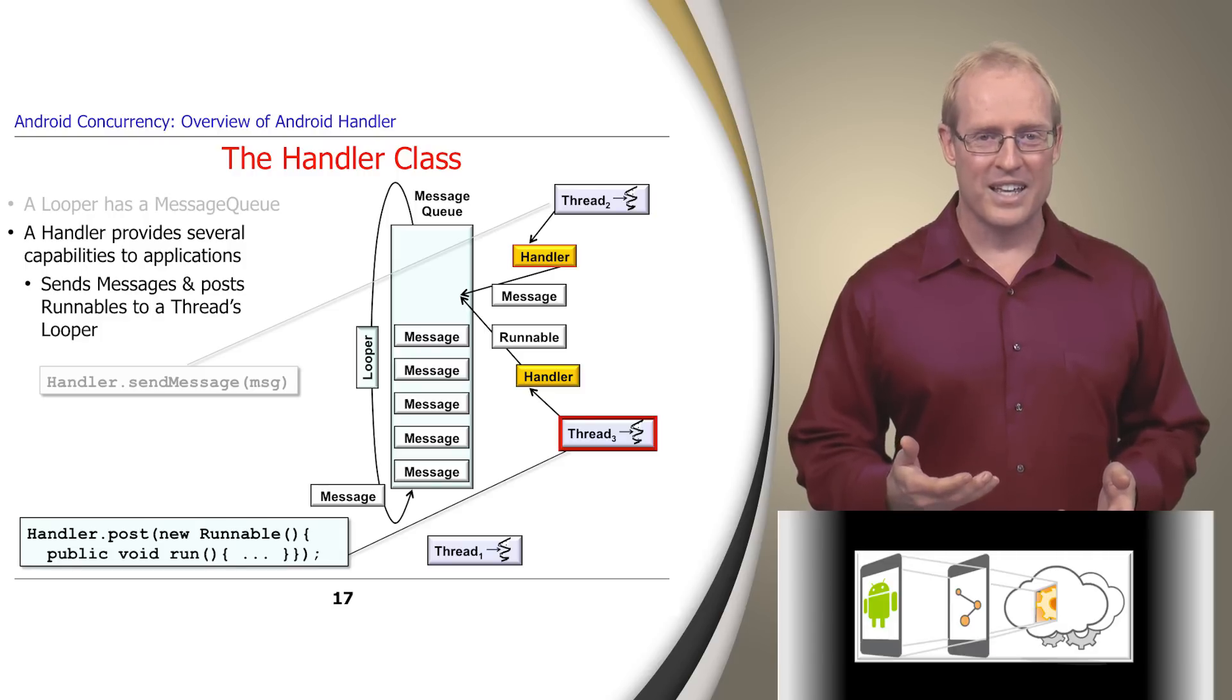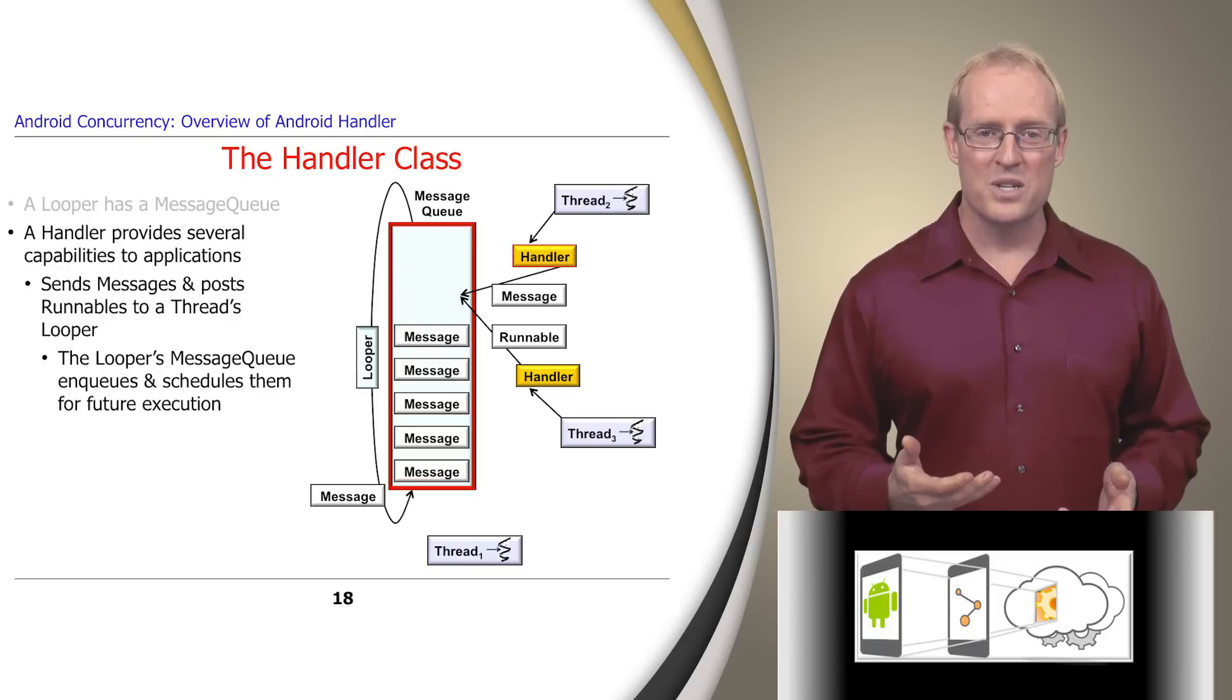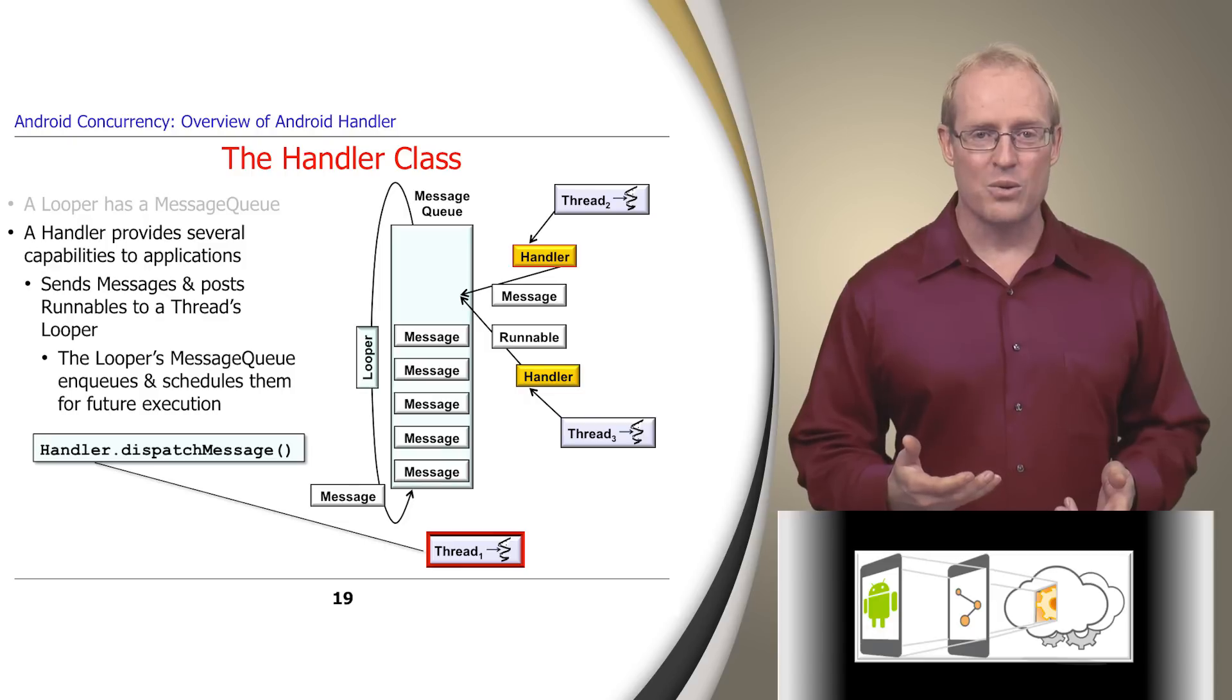In either case, the looper's message queue enqueues, schedules, and dequeues these objects and collaborates with a handler to execute them at some point in the future in the context of the thread associated with a handler.